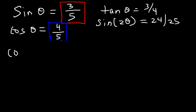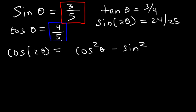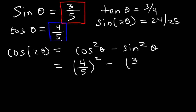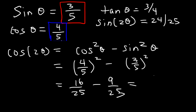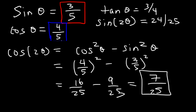Now let's find the value of cosine 2θ using the formula cosine² θ − sine² θ. Cosine is 4/5 and sine is 3/5. So we get (4/5)² − (3/5)² = 16/25 − 9/25. Since 16 − 9 = 7, cosine 2θ = 7/25.